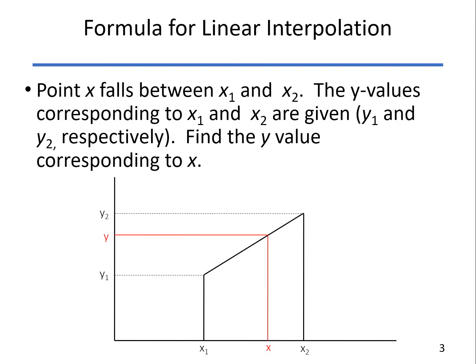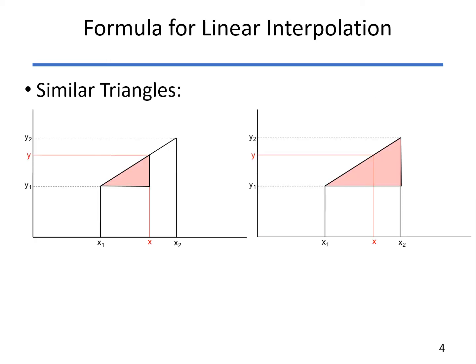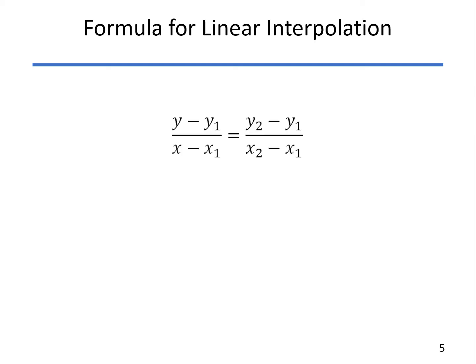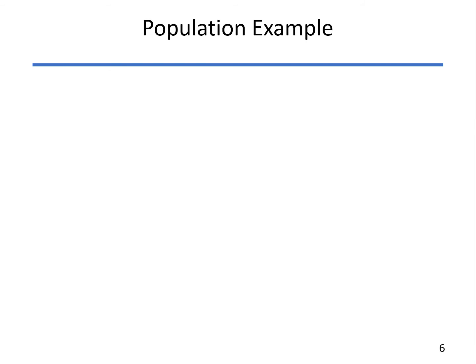So we want to find the value of the population at year X. So that falls between years X1 and X2. The corresponding values for X1 and X2 are Y1 and Y2. We're trying to find that value of Y that corresponds to X. So we look at similar triangles here. And there you see the formulas. Height over base is consistent for both of those. And so we solve that for the value of Y and get this formula.